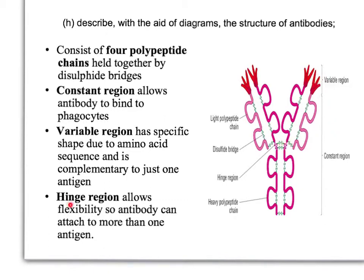You should know what the hinge region, the variable region, and the constant region all do. That describes the structure of an antibody with its four polypeptides held together by disulfide bridges.